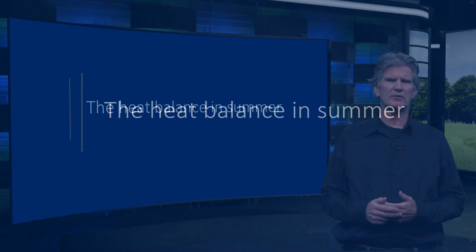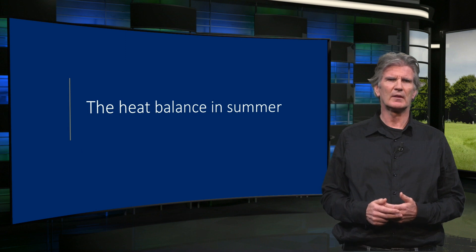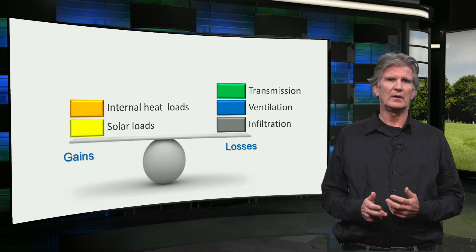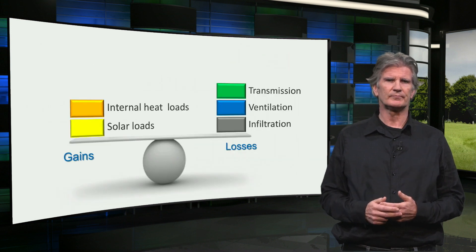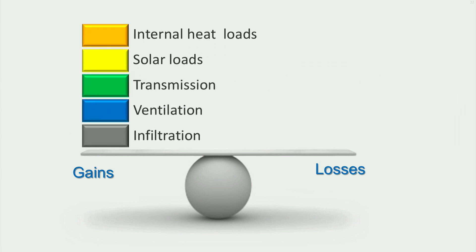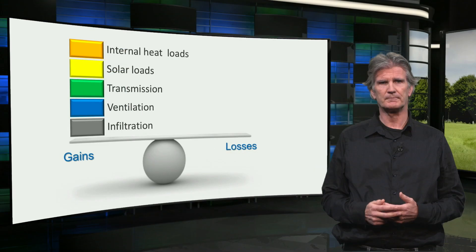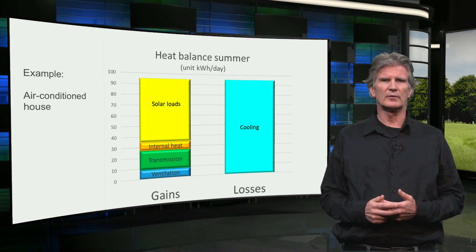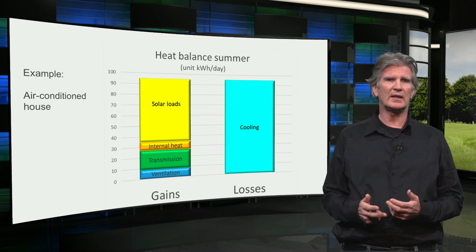What does the heat balance look like on a hot summer's day? In this case the outdoor temperature is higher than the indoor temperature, and there is an air conditioning system to cool the indoor air. The solar loads and the internal loads are still on the gain side, but the transmission, ventilation, and infiltration have also moved to the gain side of the balance, because it is warmer outside than inside. In this case the heat losses only consist of the cooling from the air conditioning.